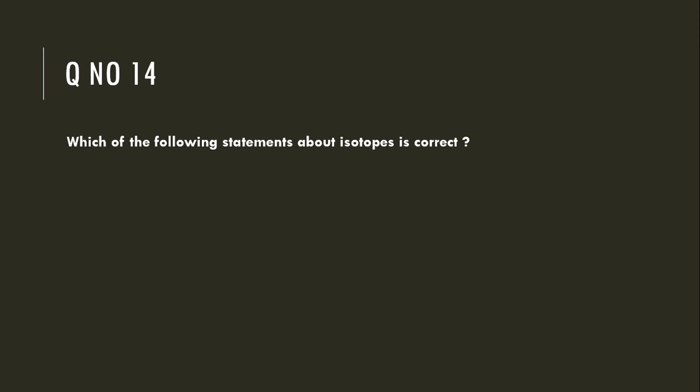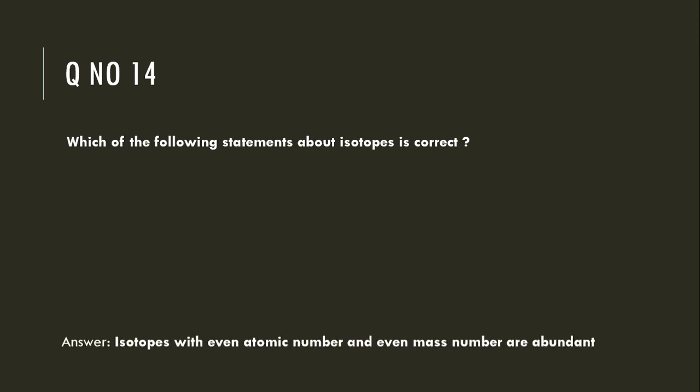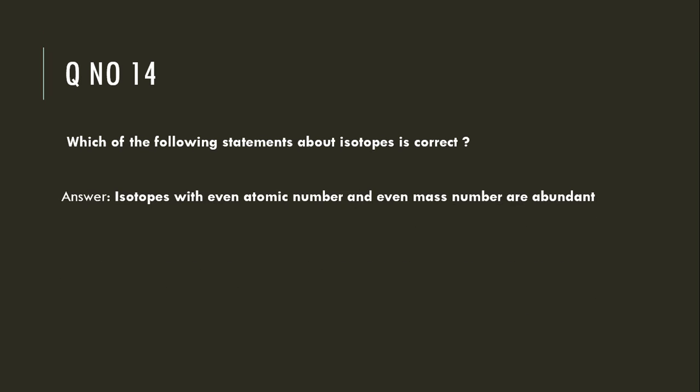Which of the following statements about isotopes is correct? Isotopes with even atomic number and even mass number are more abundant.